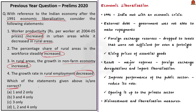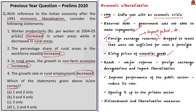Let us know about economic liberalization. In 1991, India met with an economic crisis relating to its external debt where the government was not able to make repayments, especially on the borrowings from abroad. The foreign exchange reserves dropped to a level that was not even sufficient for a fortnight. This crisis was further compounded by rising prices of essential goods.